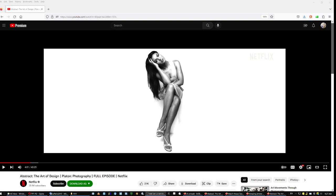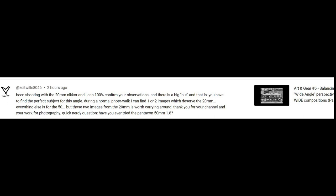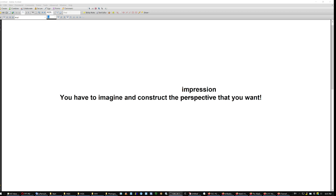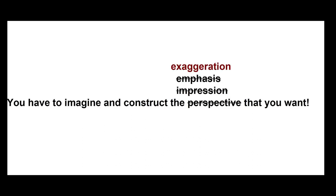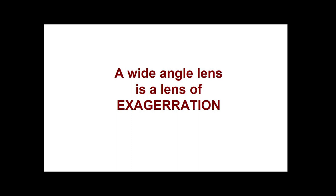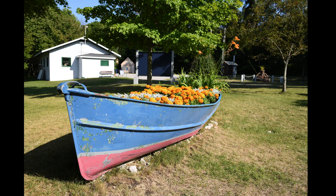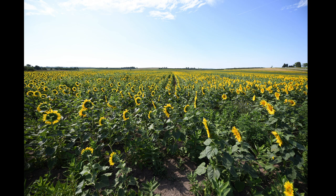So what is the use of a wide-angle lens then? You have to imagine the perspective that you want — the impression or the emphasis that you want to give. A wide-angle lens is a lens of exaggeration: you want to exaggerate the bow and length of a boat, or exaggerate the field of view and the number of items in the image.